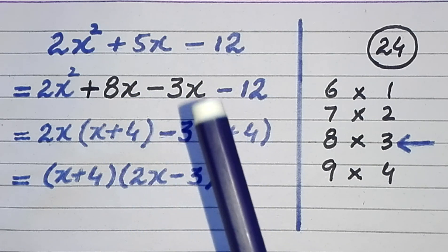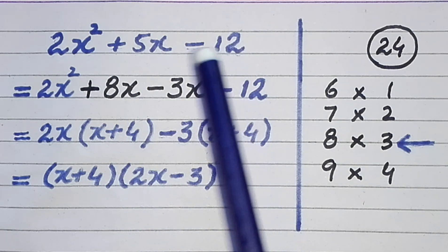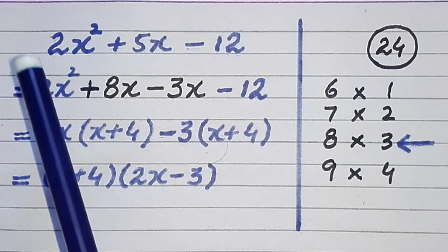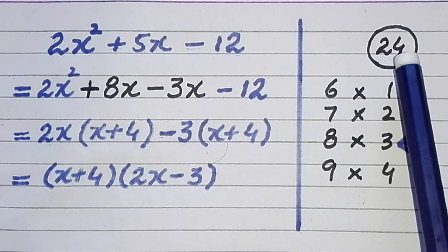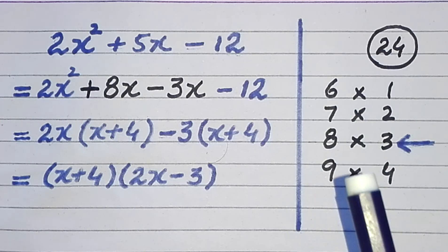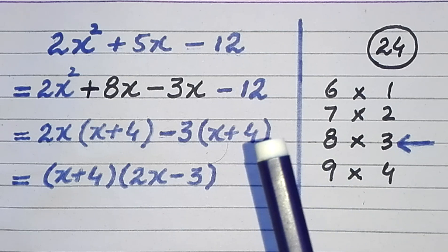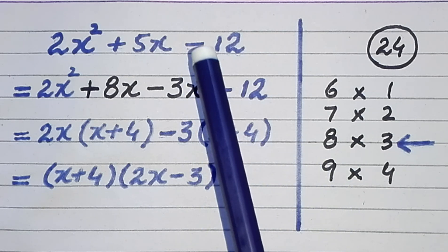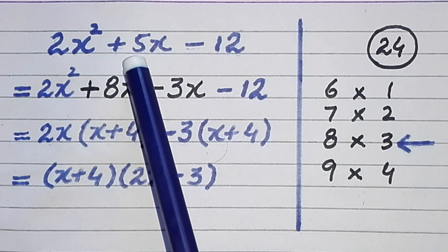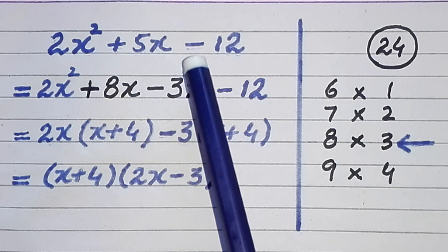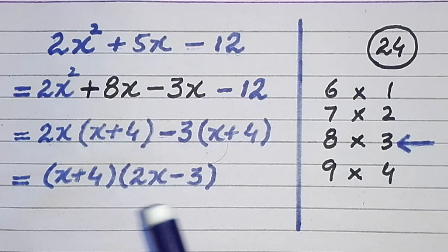In the very first step we multiply the constant term and the coefficient of the quadratic term to find their product. In the second step we watch this sign — minus means we are to move above this number, and plus means we are to move below this number.